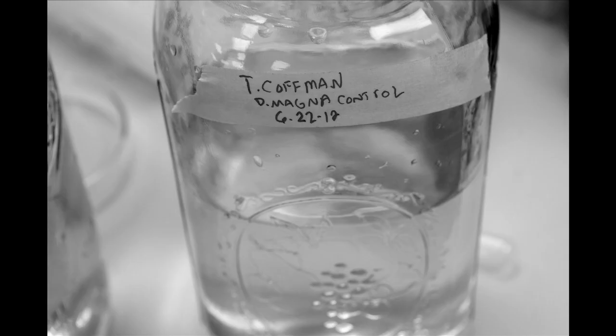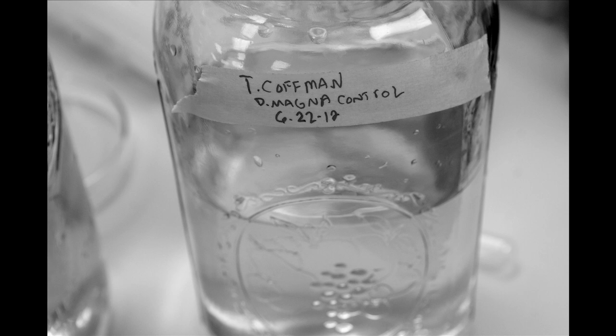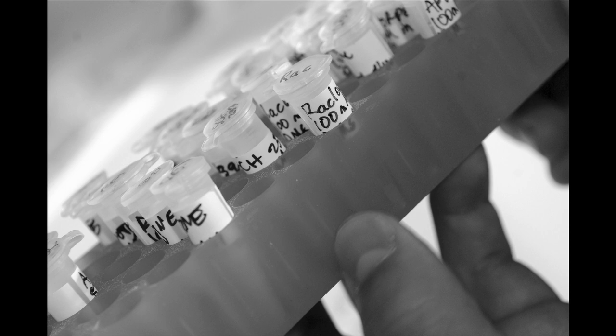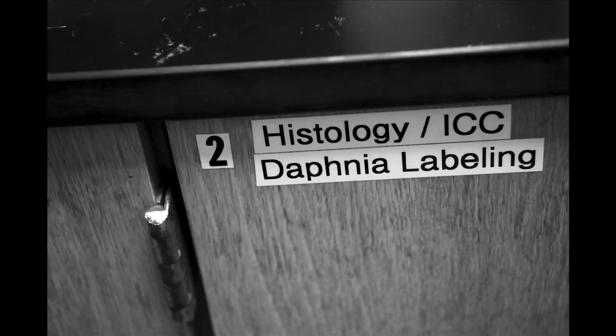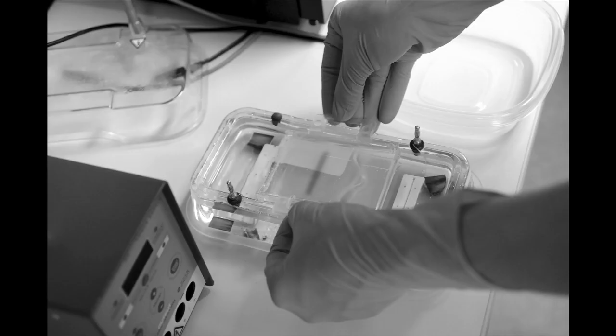So the use of model organisms to study human diseases has kind of a long history, and I think that maybe the general public looks at this and asks the question, why would you want to study a fruit fly or a water flea in order to understand how human disease works? And I think the short answer to that is that there are shared features that may not be evident, and those are in the genes. So the Daphnia genome has many genes that are similar to human genes.